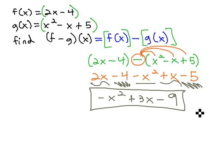And this polynomial, -x² + 3x - 9, represents the function (f - g)(x). Or if we subtract the functions, we'll end up with this new function.